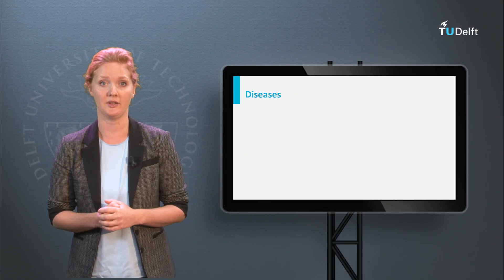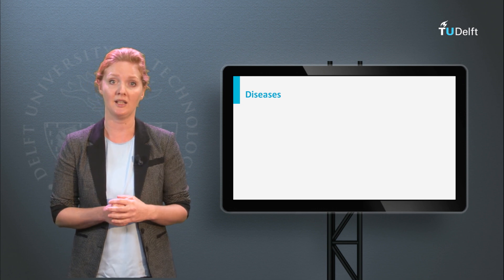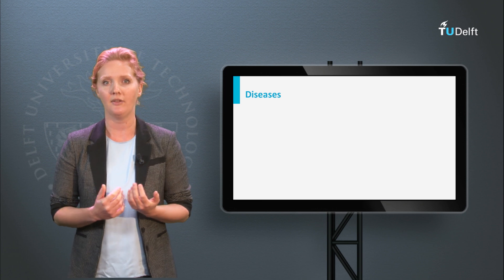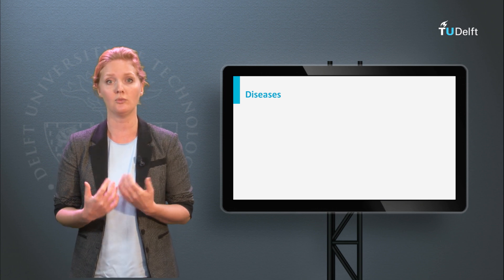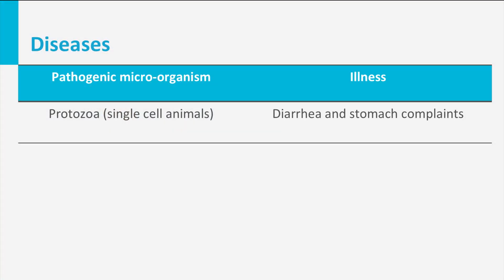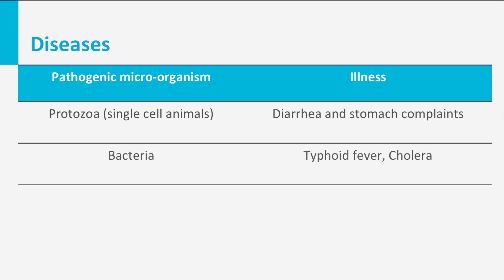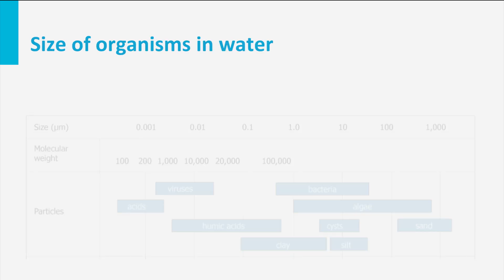Pathogenic microorganisms can cause different diseases, which may become epidemic rather quickly in water. They can be divided into three main groups, each with their own individual characteristics. Protozoa, which are single-cell animals, can cause diarrhea and stomach complaints. Bacteria are responsible for typhoid fever and cholera. And viruses are the smallest organism of the three groups, responsible for hepatitis and polio.